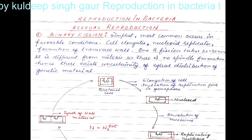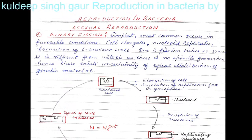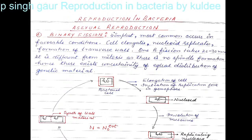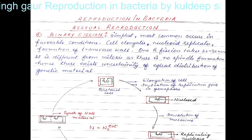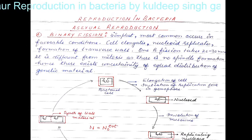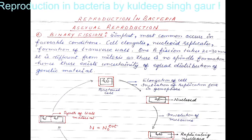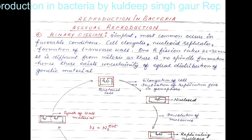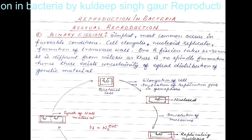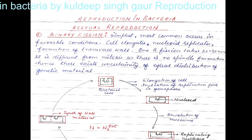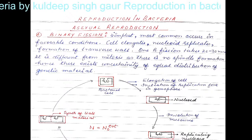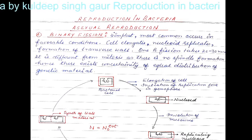Bacteria reproduce asexually by different modes. The first one is binary fission. It is the simplest method of asexual reproduction and it is most commonly found in favorable conditions. When the conditions are very conducive for the survival of the bacteria, the bacteria takes this course of reproduction.